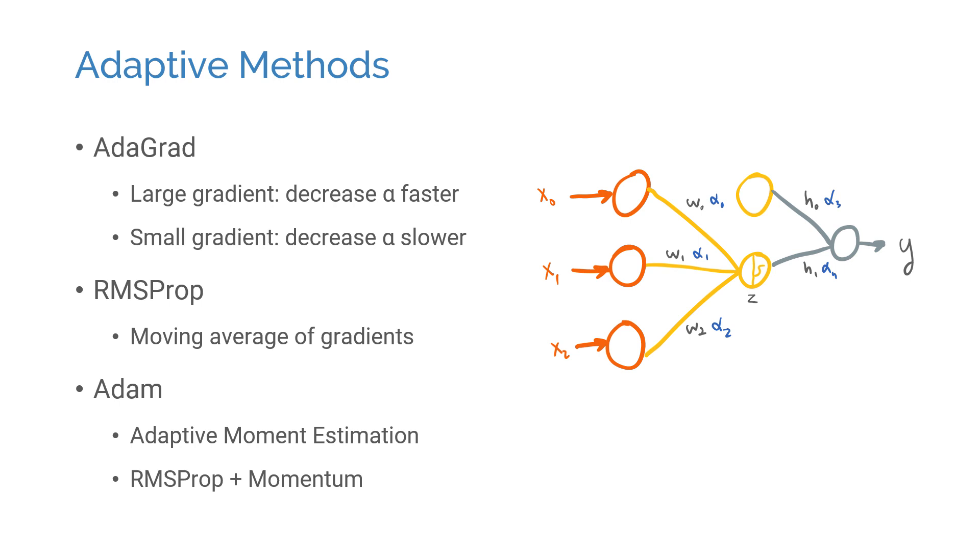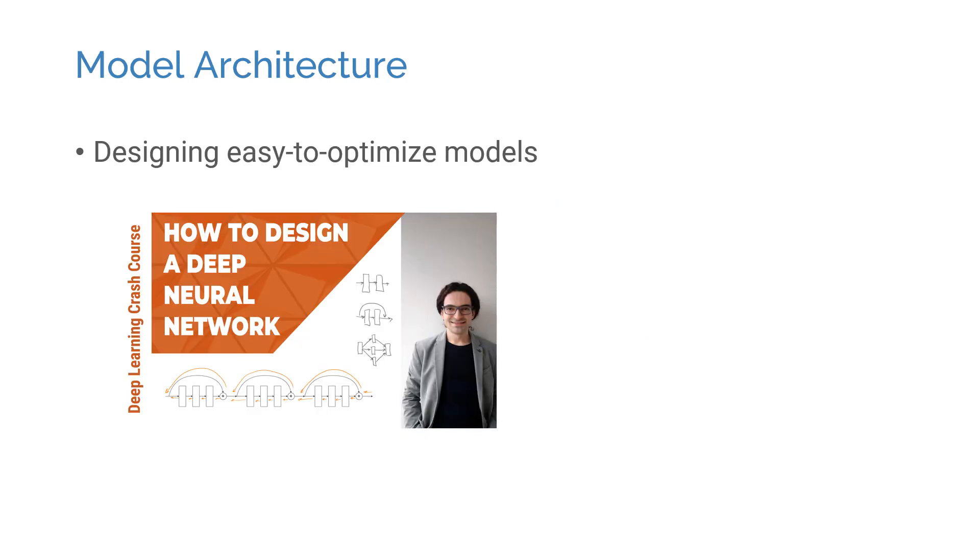In addition to the optimization algorithm, the model architecture also has a big impact on how easy it is to optimize a model. Many successful models owe their performance to their architecture rather than the choice of the optimization algorithm. You can check out my earlier video on designing neural networks to learn more about how model architecture can facilitate the optimization procedure. You can find it in the Deep Learning Crash Course playlist in the description below.